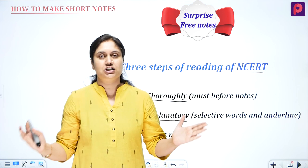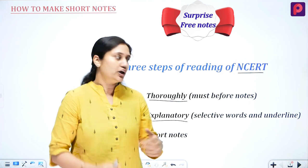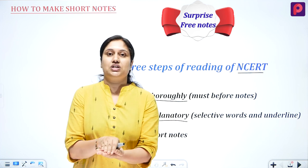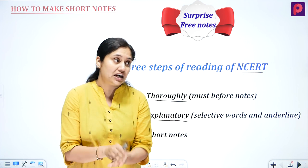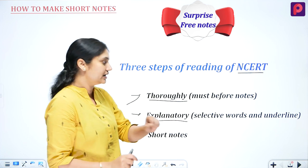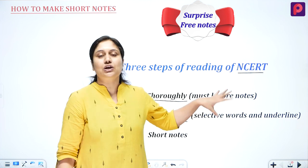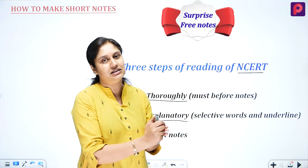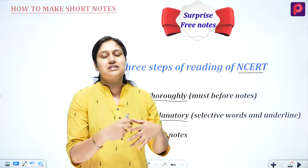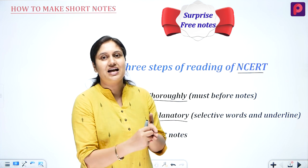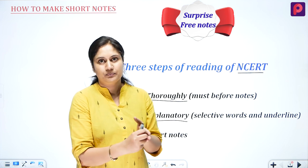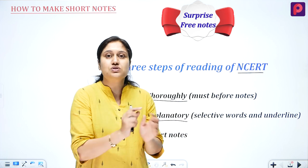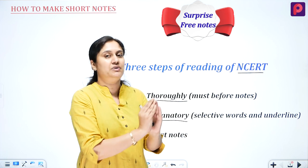We have to study a lot and make good notes. We need to explain the explanation of those terms. When we write the explanation, we have to focus on those particular selective words that have not been explained. For example, if we encounter the word 'hemoglobin' in the first chapter, what is hemoglobin? How is it? We need to write out its explanation.